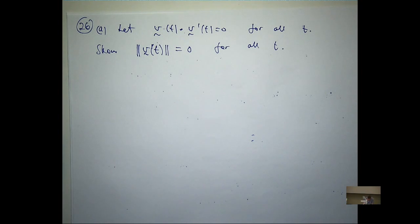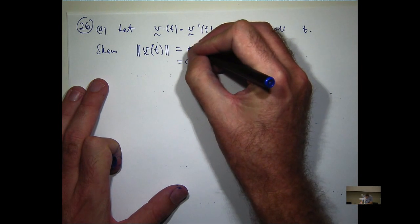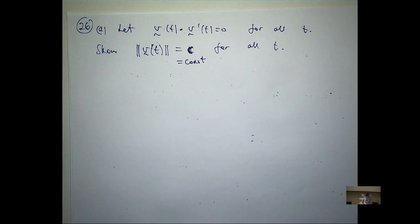So how did you do it? Oh, sorry. No, not zero. Constant. Sorry. Show the speed's constant. Constant. Okay. Yes. How did you do it?